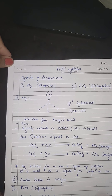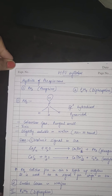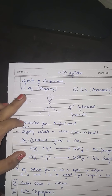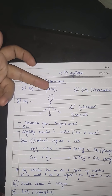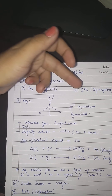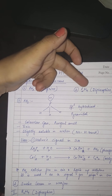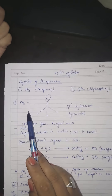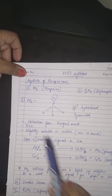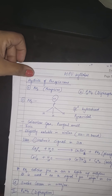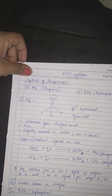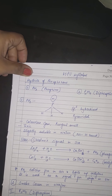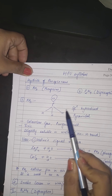Phosphorus ke do types ke hydride hain: ek PH₃ jo phosphine kehlaata hai, aur doosra P₂H₄ jo diphosphine kehlaata hai. Pehle hum PH₃ se start karte hain. Jaise NH₃ tha (ammonia/amine), usi tarah PH₃ ko phosphine kehte hain, aur phosphine ka structure NH₃ jaisa hi hota hai.